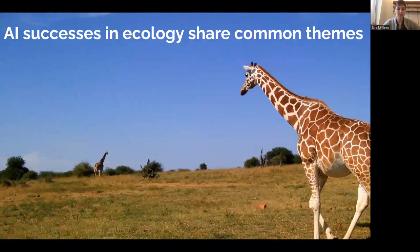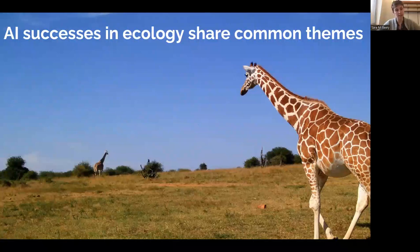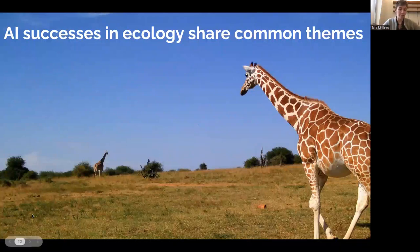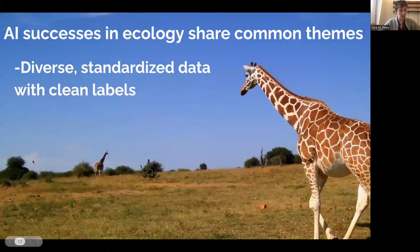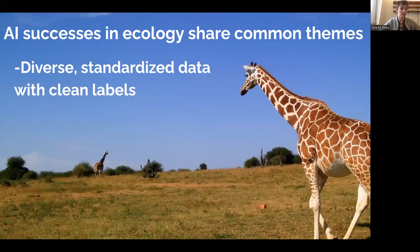There are fundamental themes shared across these AI successes that are interesting to think about for ecologists grappling with when to engage with the machine learning community. One very key component of most AI successes is the effort put into curating diverse, standardized datasets with clean labels in order to train the machine learning models. Clean labels here is the key.